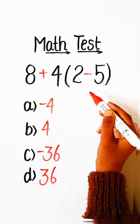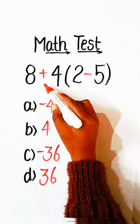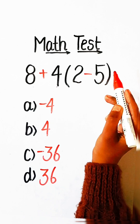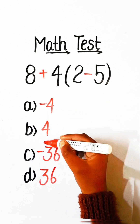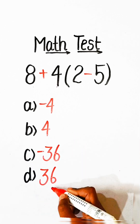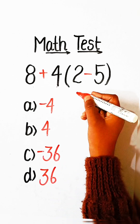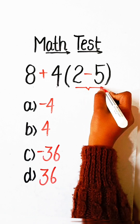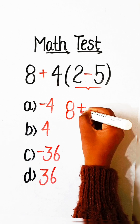Hello everyone, welcome back to my YouTube channel. In this video we will solve this math equation: 8 plus 4 under bracket 2 minus 5 equals to what? Option A: minus 4, Option B: 4, Option C: 36, Option D: 30 minus 36. So let's solve this — first we have to solve the bracket.